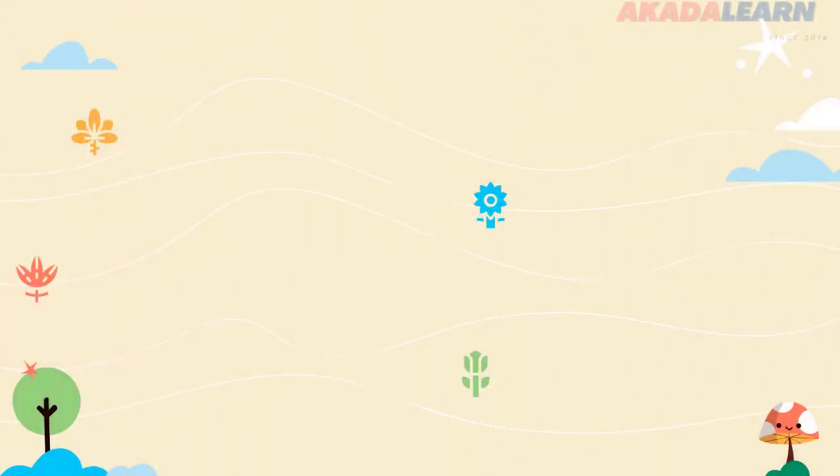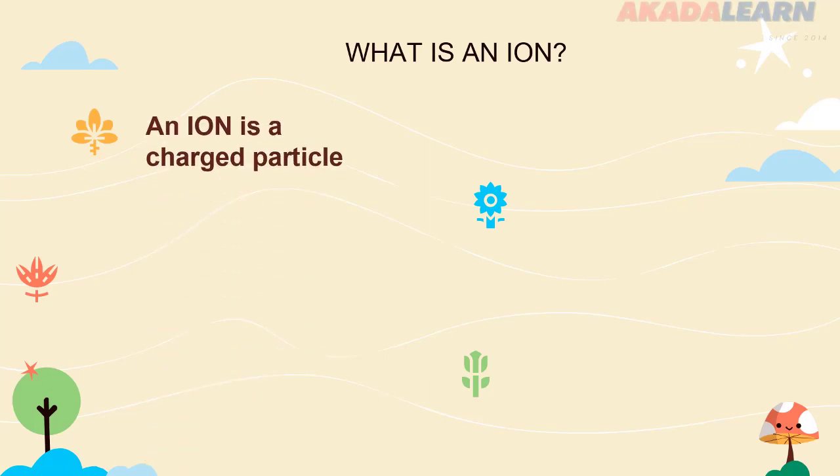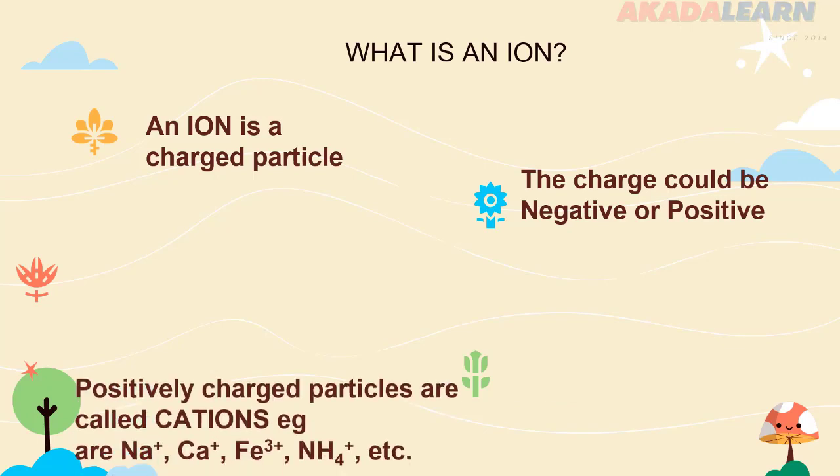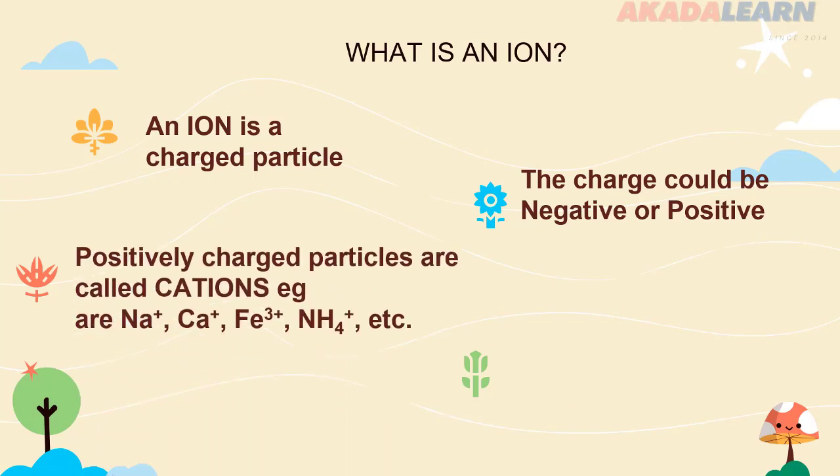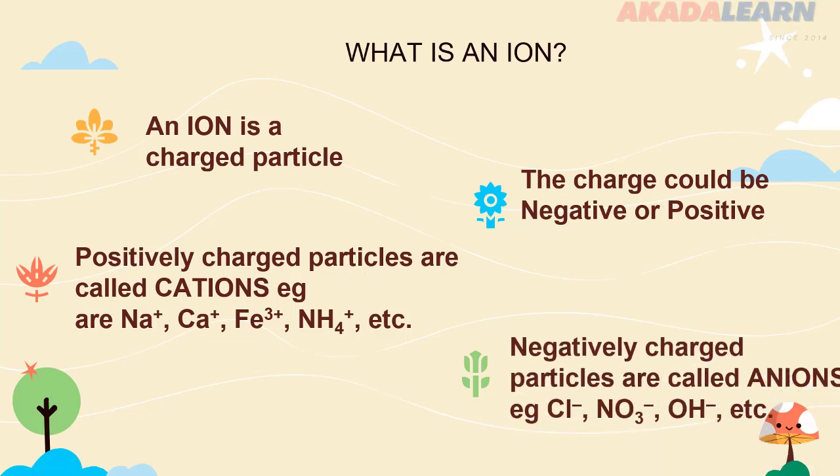Let's now look a little bit closer at some of these words and get their true meanings. What is an ion? An ion is simply a charged particle. The charge could be negative or positive. Positively charged particles are called cations. Examples are the sodium ion, calcium ion, the ion ion, and then the ammonium ion.